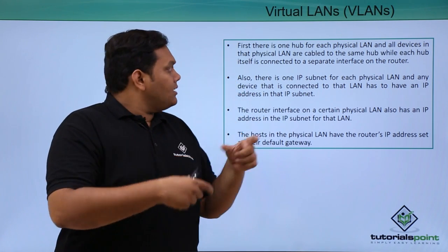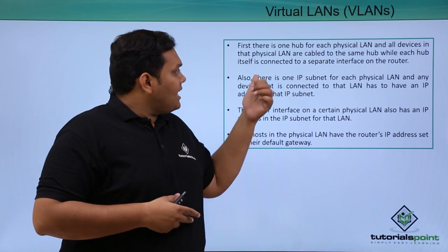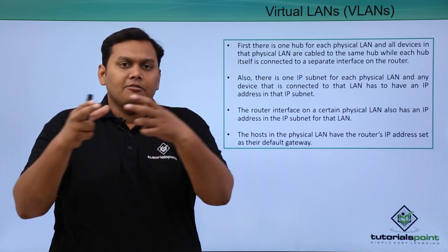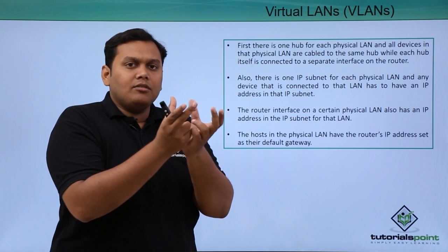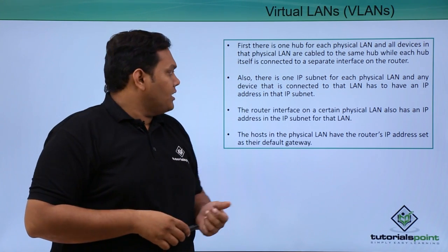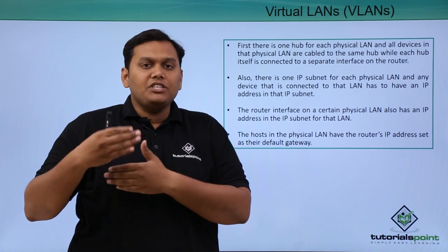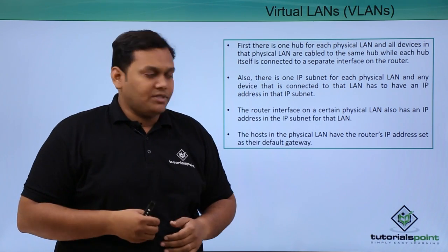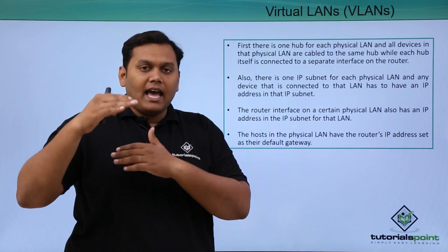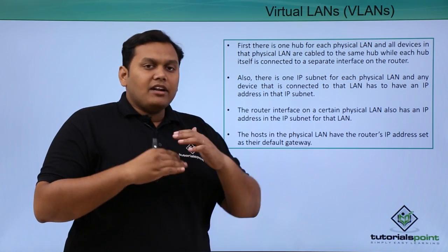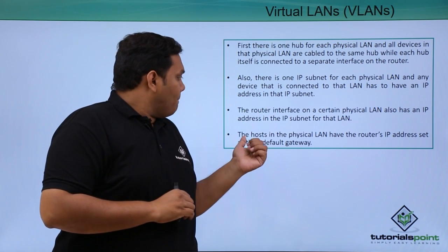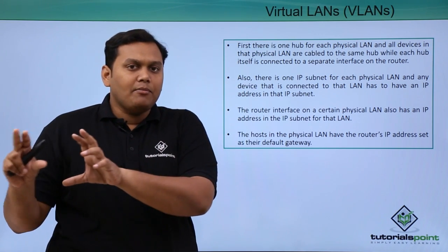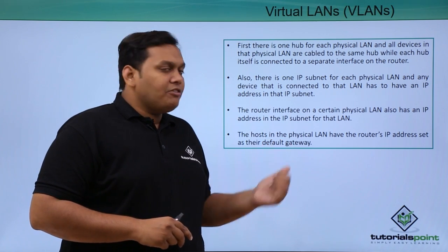All devices in a physical LAN are cabled to the same hub — engineering, sales, marketing, and finance each have their own hub connected to one router interface. There is one IP subnet per physical LAN, and every device connected to that subnet shares the same IP addressing. The router interface on each physical LAN has the IP address of that subnet, and hosts use the router's IP address as their default gateway.